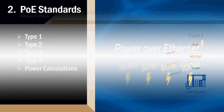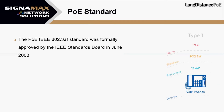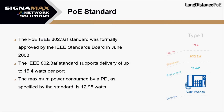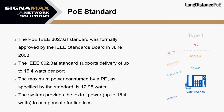The initial POE standard was 802.3AF, approved by IEEE in 2003. It defined that the PSE needs to be able to provide up to 15.4 watts, and the PD can expect to receive up to 12.95 watts. The difference accounts for loss on the line — worst case scenario being the lowest gauge cable at the maximum distance of 100 meters, or 328 feet.